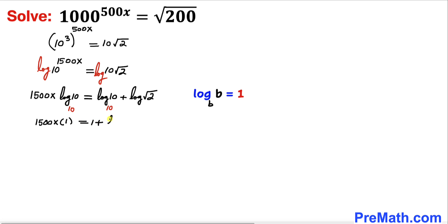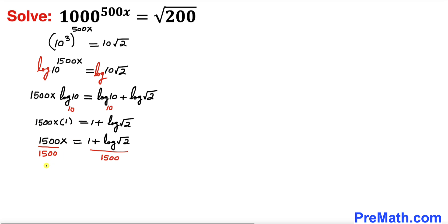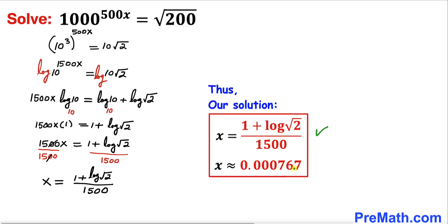Since 1500x times 1 is simply 1500x, we divide both sides by 1500 to isolate x. Therefore x equals 1 plus log of square root of 2, all divided by 1500. Using a calculator, the approximate value of x is 0.000767. Thanks for watching and please subscribe to my channel for more exciting videos.